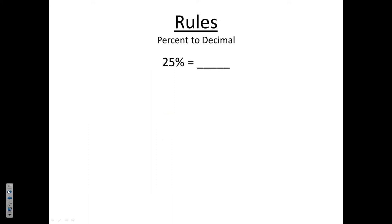We're going to go through a lot of different rules for percents, decimals, and fractions. The first rule is how to change a percent to a decimal. Take 25% — first drop the percent sign and find where the decimal currently is. Since there's no decimal shown, it follows right after the last digit, the five. To change that percent to a decimal, move the decimal two places to the left.